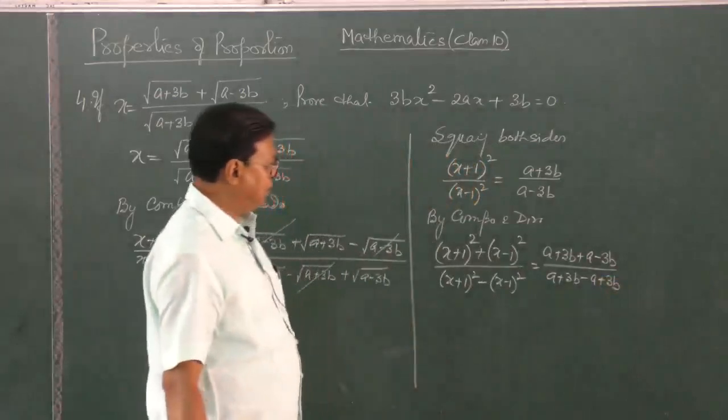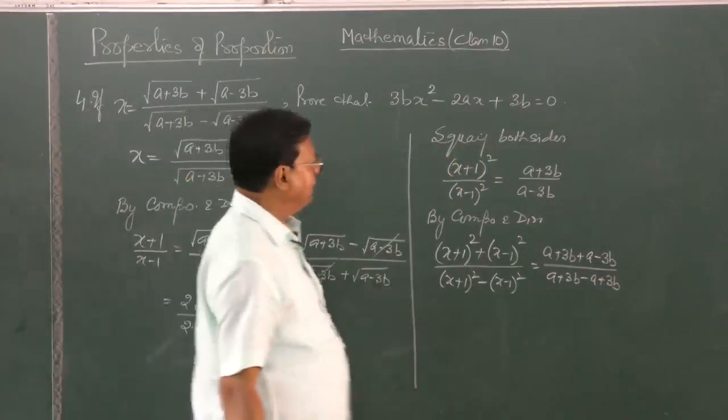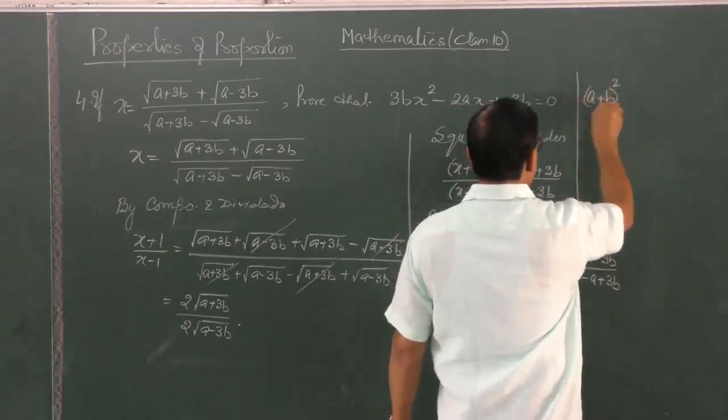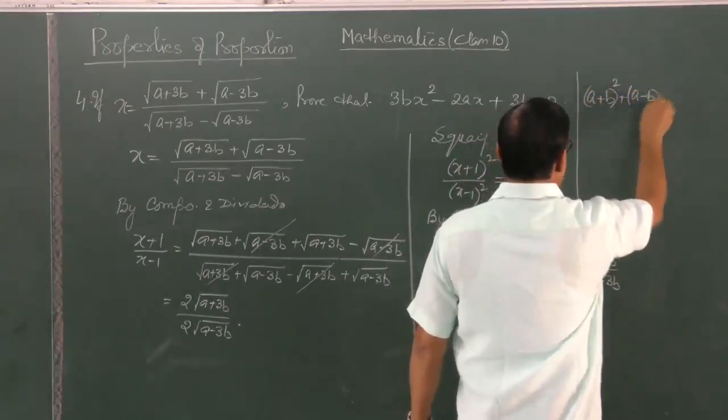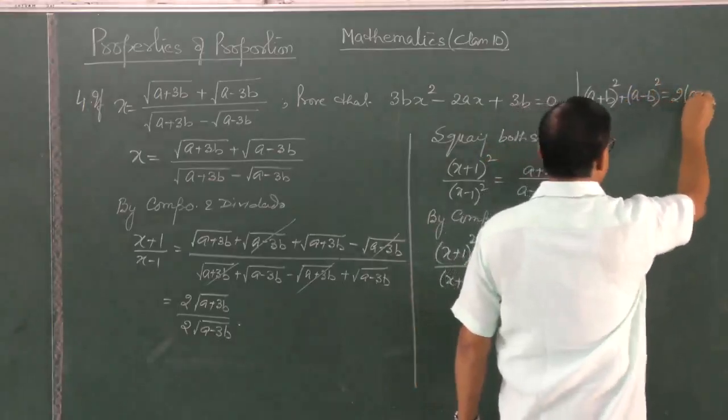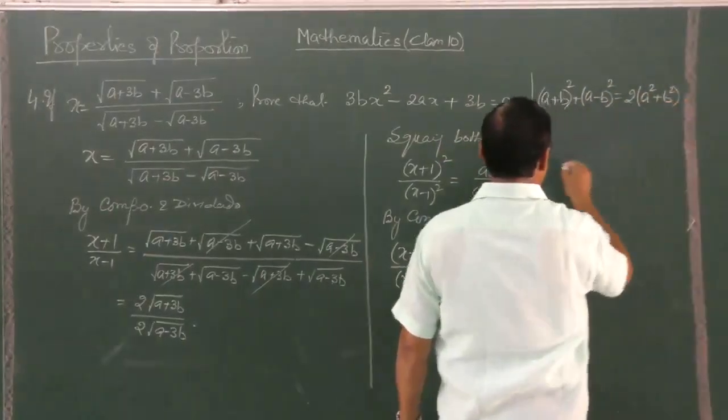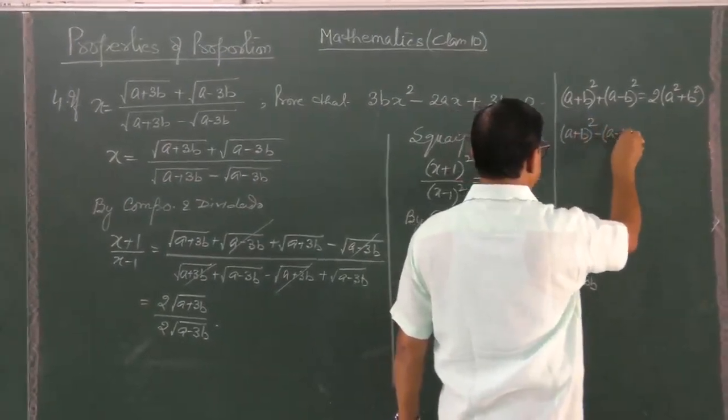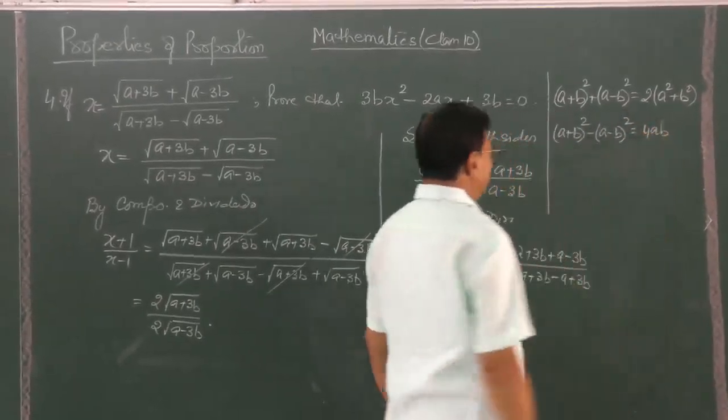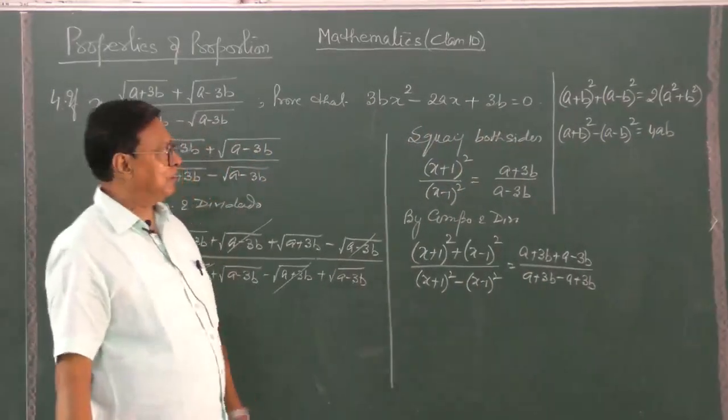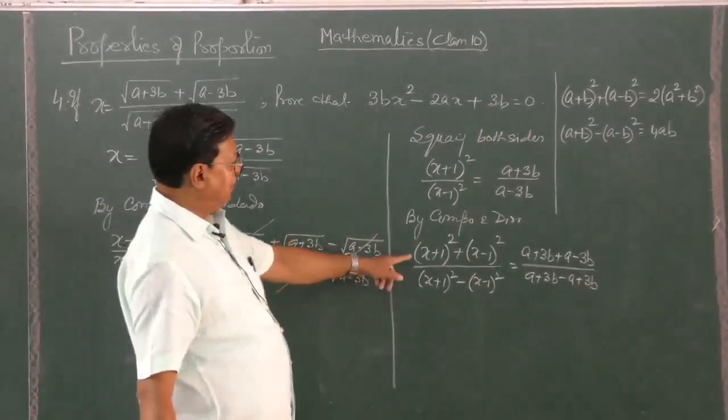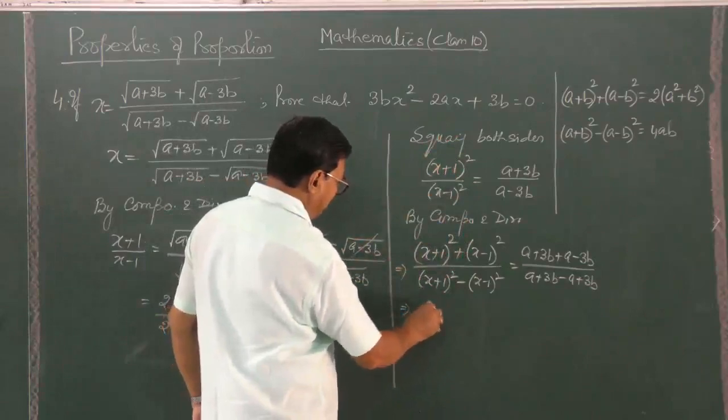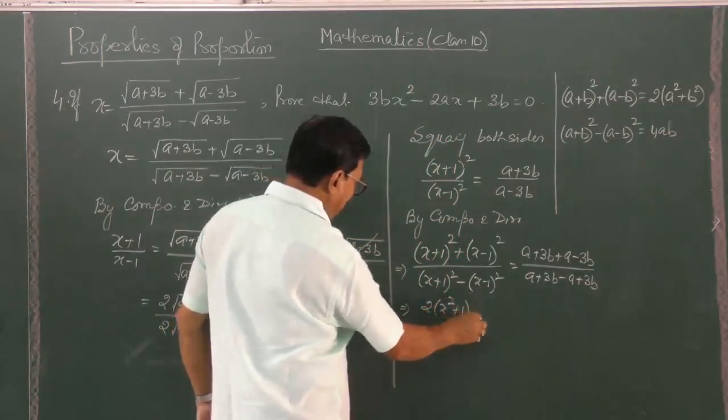So applied componendo dividendo again. Now here this formula you must have done in class 8. If not, please make a note, will come handy. So these are the two identities which you must have done in class 8. It is a plus b whole square plus a minus b whole square is twice a square plus b square.